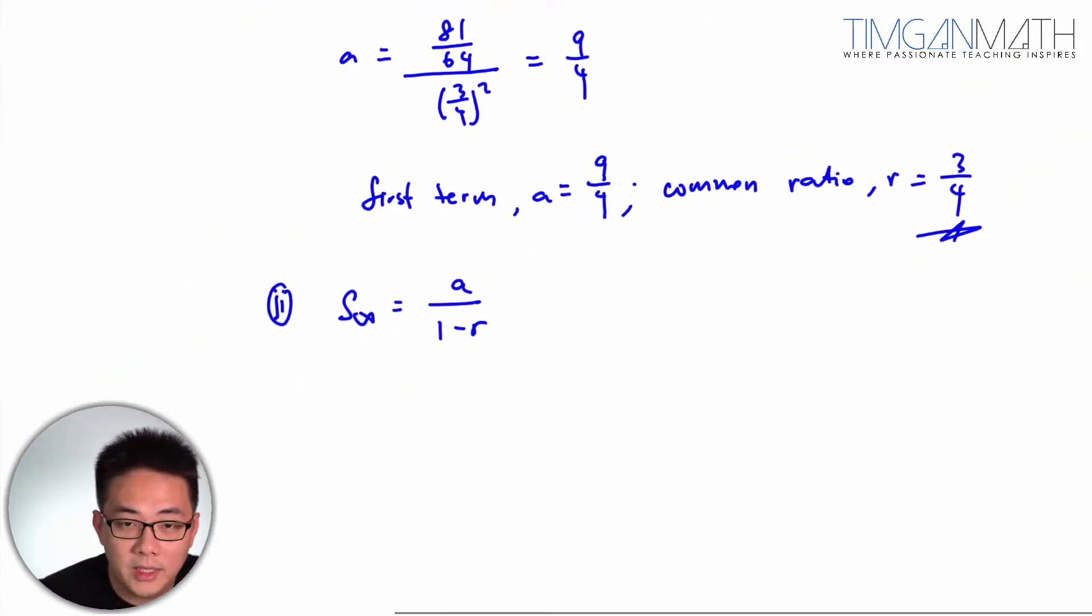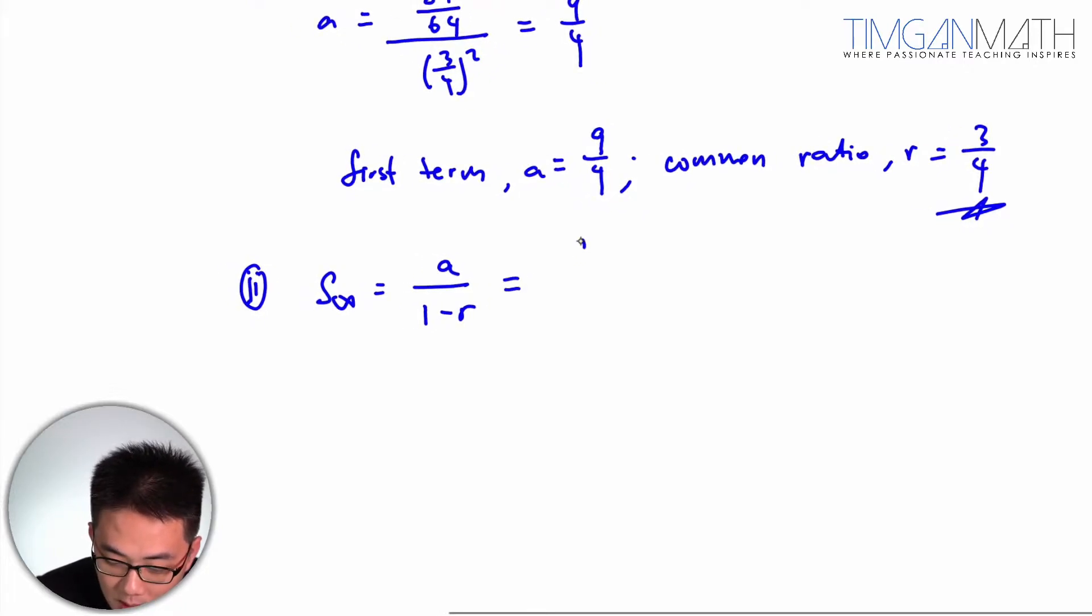So I'm just going to replace all my expression in. So this would be 9 over 4 over 1 minus 3 over 4.